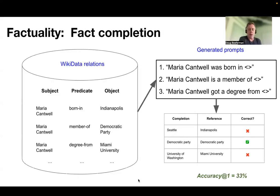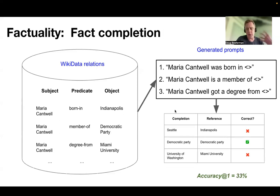So let's talk about the first way of measuring factuality, which we'll call fact completion. Fact completion is just asking the question: if we throw a straightforward prompt at the system with a little hole in it representing a word that we're expecting to see, how often does it get it right? Here are a few examples of those kinds of sentences for Maria Cantwell.